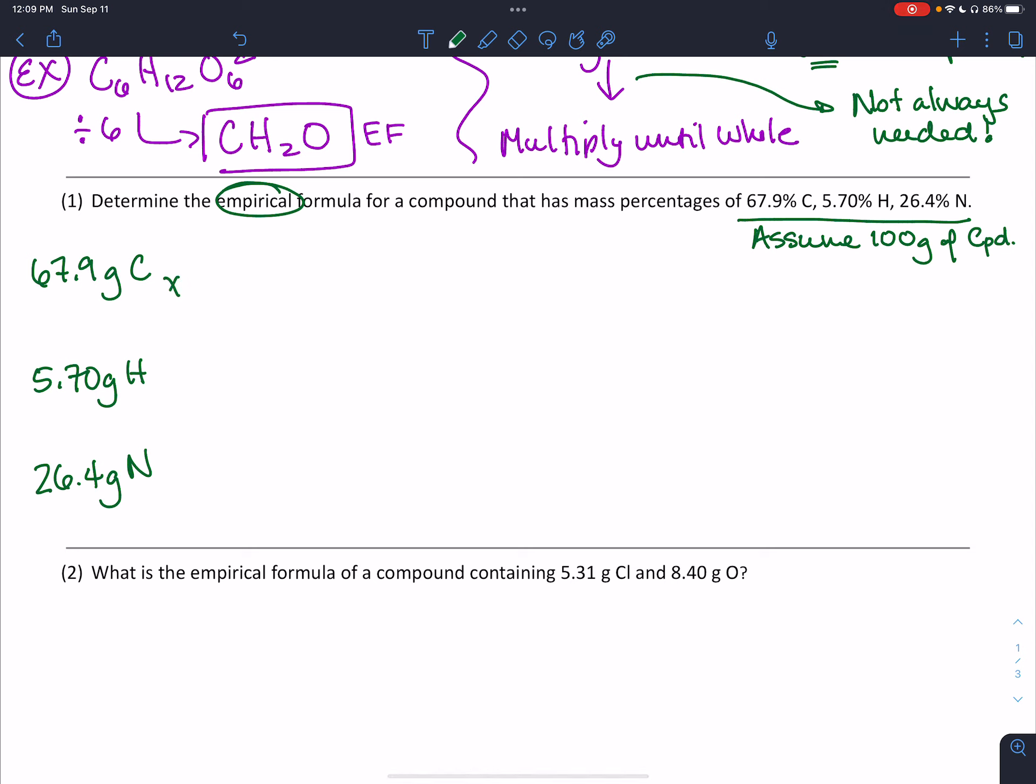Next up, mass to moles. We multiply using our conversion factor with the molar mass of each element. One mole of carbon has a mass of 12.01 grams. When I divide 67.9 by 12.01, I get 5.6536 moles of carbon. Notice how many decimals I carried there. For hydrogen, one mole has a mass of 1.01 grams. That division gives 5.6436 moles of hydrogen. Last but not least, nitrogen: one mole has a mass of 14.01 grams. That division gives 1.8844 moles of nitrogen.